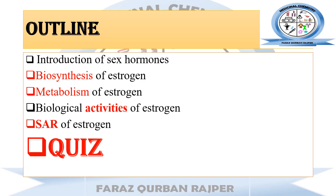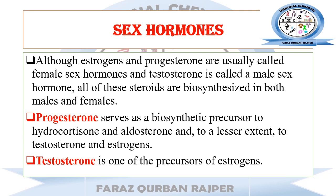Now let's start this lecture. There are different types of sex hormones present in males and females. In females, the major sex hormones are estrogen and progesterone, and testosterone serves as the male sex hormone. All of these sex hormones generally belong to the class of steroid hormones. Progesterone generally serves as the biosynthetic precursor for different types of hormones, like hydrocortisone and the mineralocorticoid aldosterone, but it also serves as a biosynthetic precursor for testosterone and estrogen, though to a lesser extent.